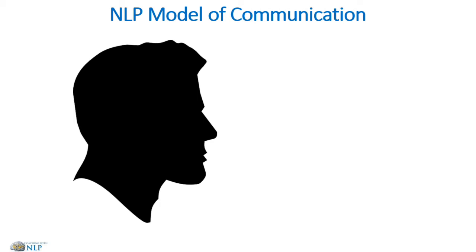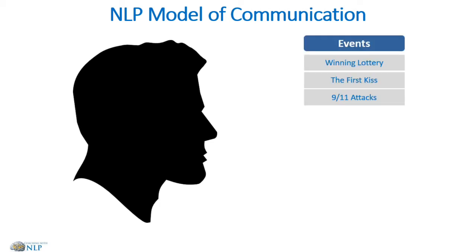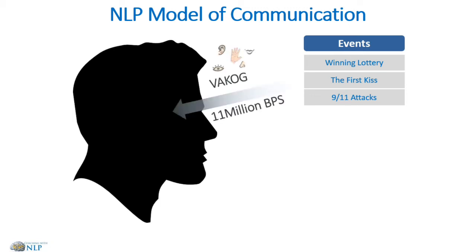What happens is we have this external event, and that event comes to us as those 11 million bits of information. We take that in through our visual, auditory, kinesthetic, olfactory (which is smell), and gustatory (which is taste) channels. Out of that 11 million bits, it runs through our internal filters — our internal filters being time, space, matter, energy, our language, and our memories.